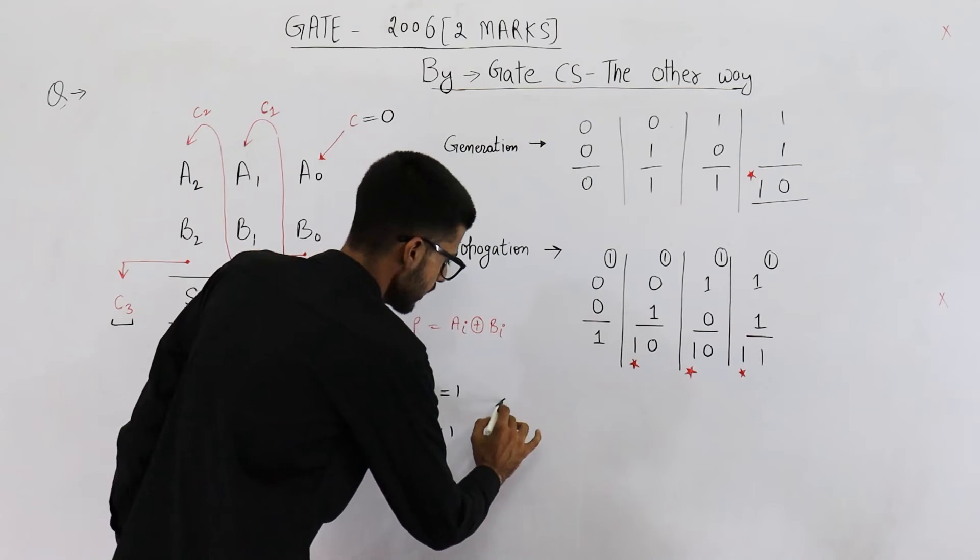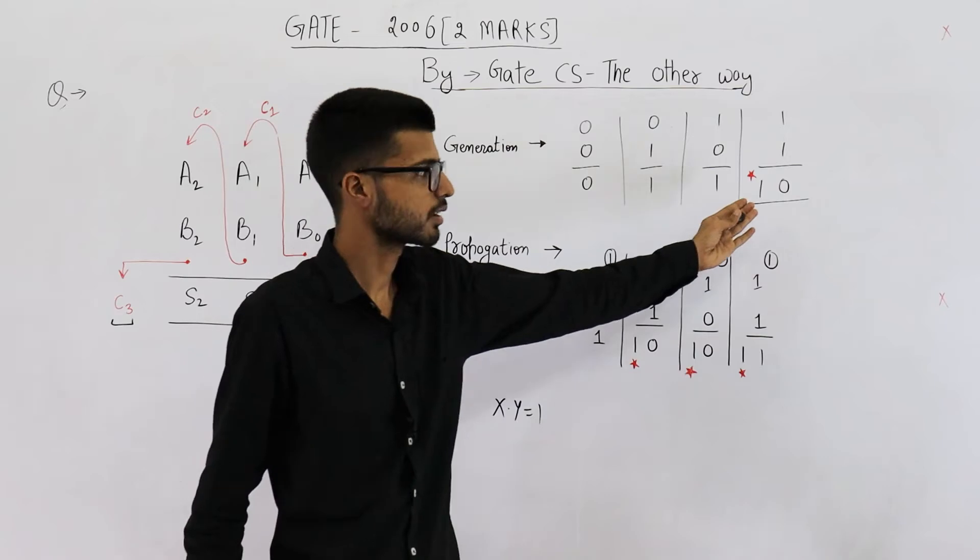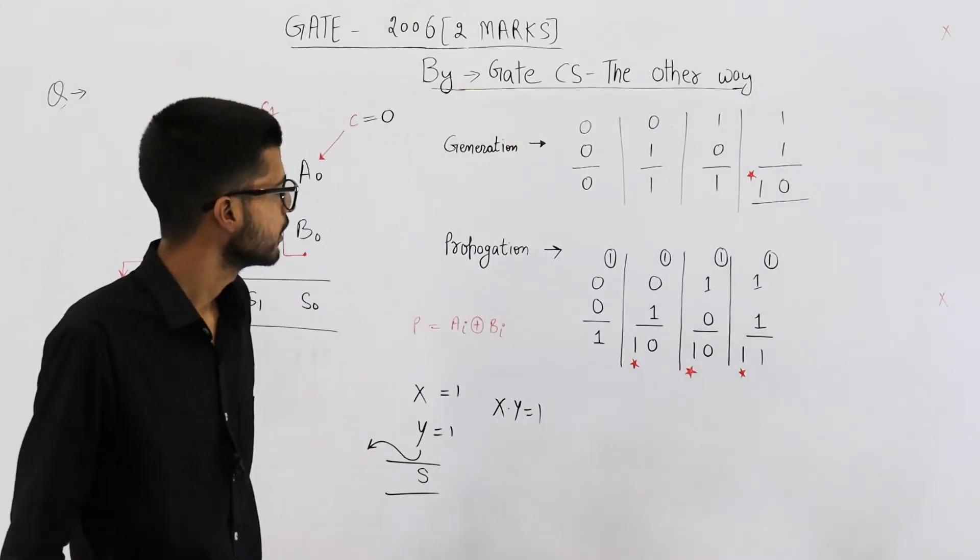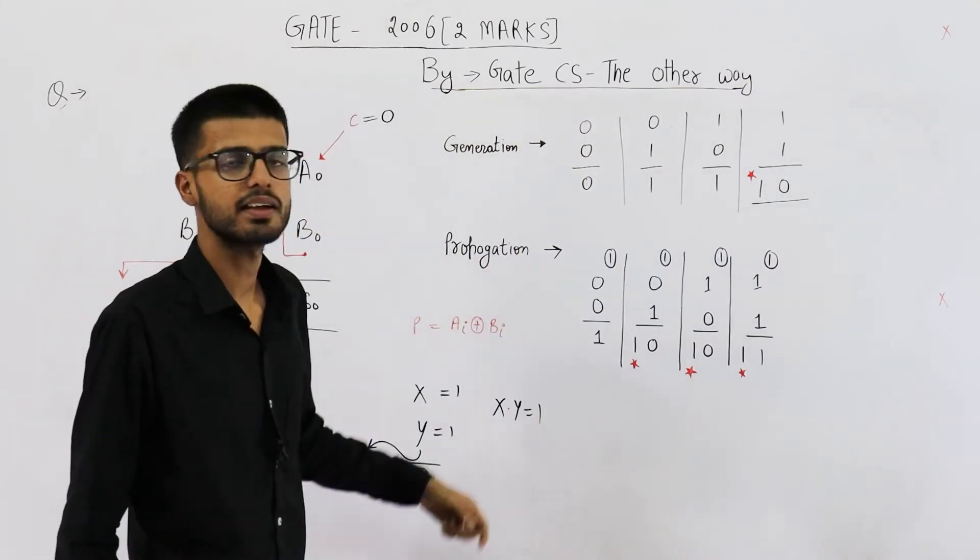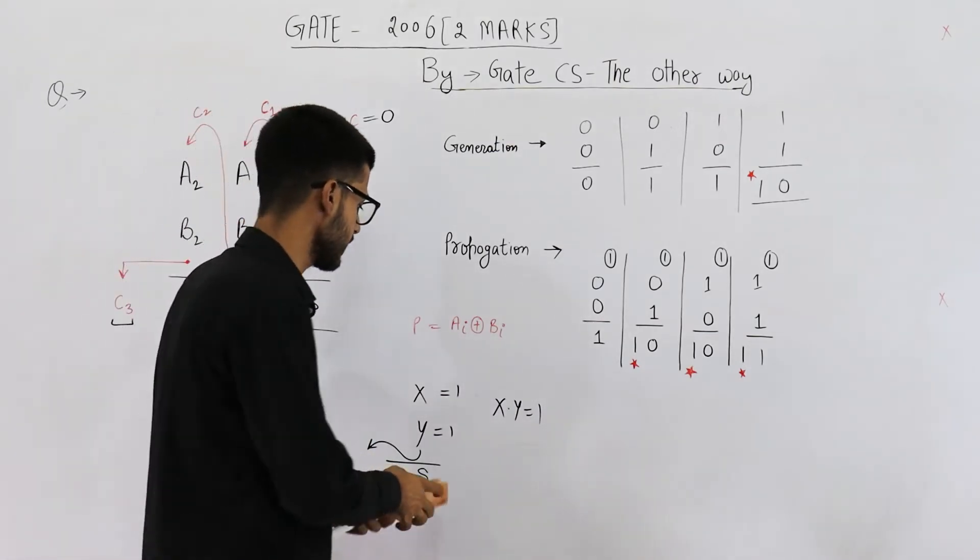That means x dot y must be 1. This is the condition for AND. Now let us see when is the carry propagated. But before that you need to know the meaning of carry being propagated.